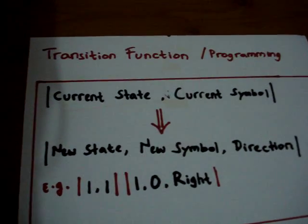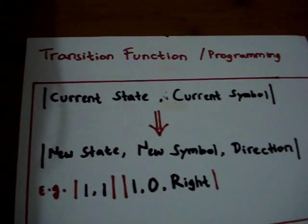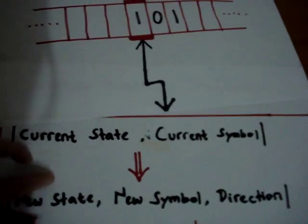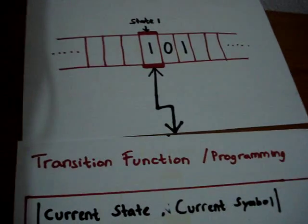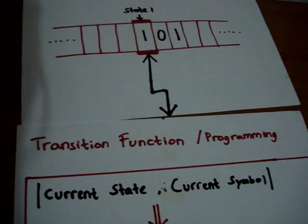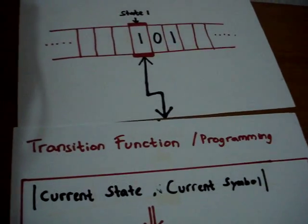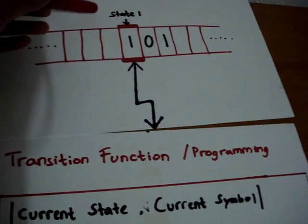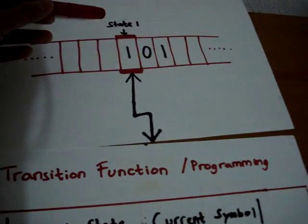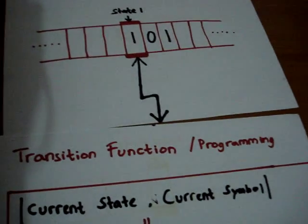The transition function or programming talks to the read and write head. Depending on what the read and write head is reading at a certain time, the machine will follow the predefined program in the transition function.